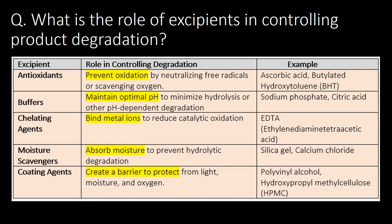Second: buffers — buffers maintain optimal pH to minimize hydrolysis or other pH-dependent degradations. Third type: chelating agents — they bind with metal ions to reduce catalytic oxidation. Fourth: moisture scavengers — they absorb moisture to prevent hydrolytic degradation. And fifth: coating agents — used in tablet manufacturing to create a barrier to protect from light, moisture, and oxygen.